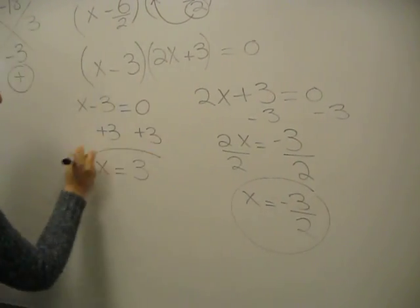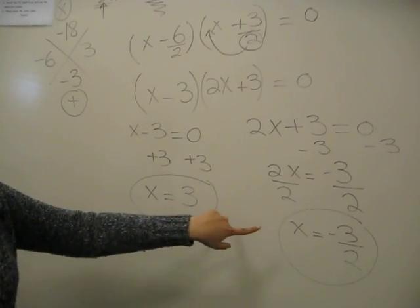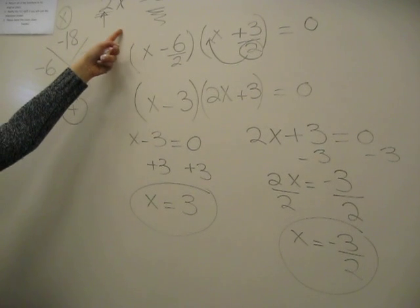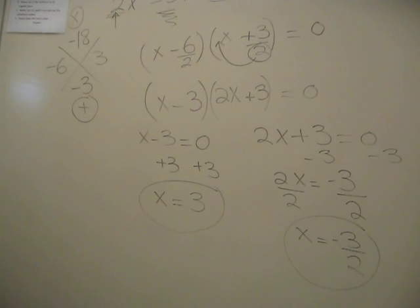So you have two answers. You have X equals 3, and X equals negative 3 over 2. That means both of those answers, if you plug it in the actual equation, you would get 0. Take care.